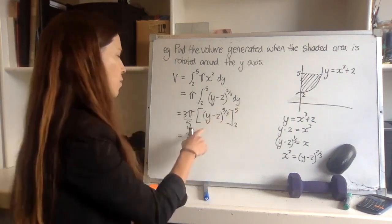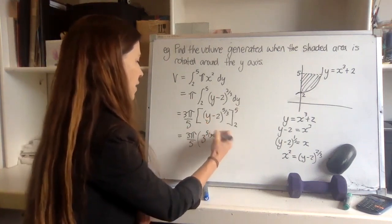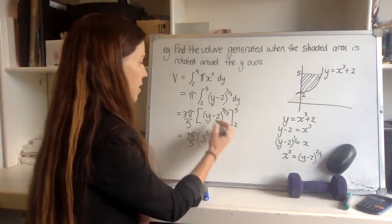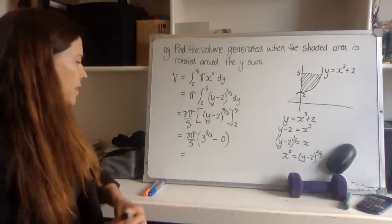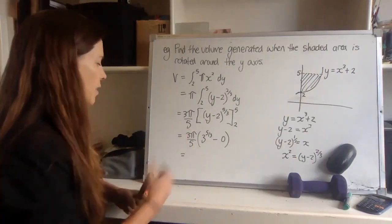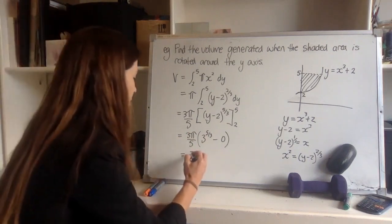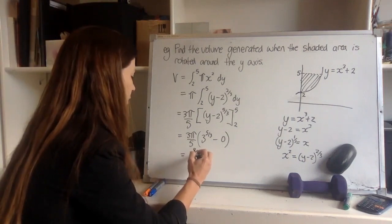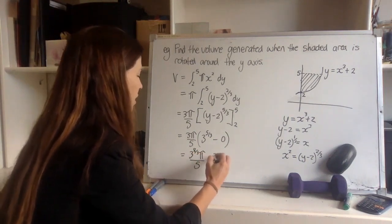Now, subbing in, when y equals five, we have three to the five-thirds, and minus, well, we're going to get nothing there. And now to tidy up, I can see that I've got three to the power of one multiplied by three to the power of five-thirds, so that gives me three to the power of eight-thirds pi over five cubic units.